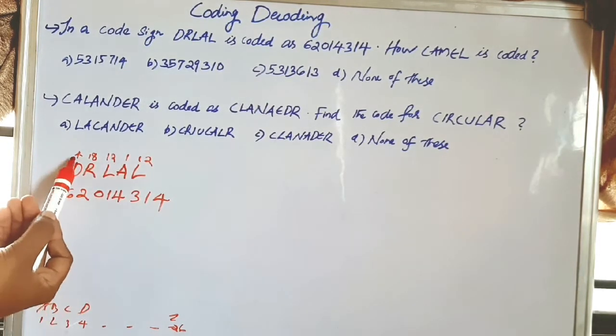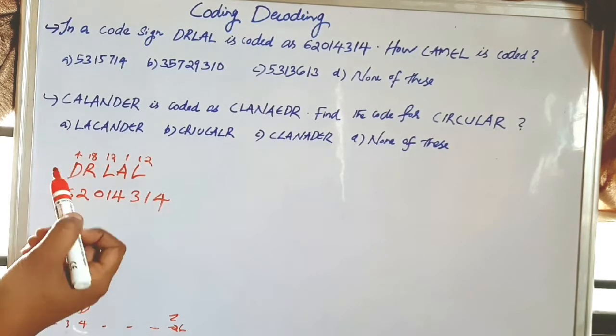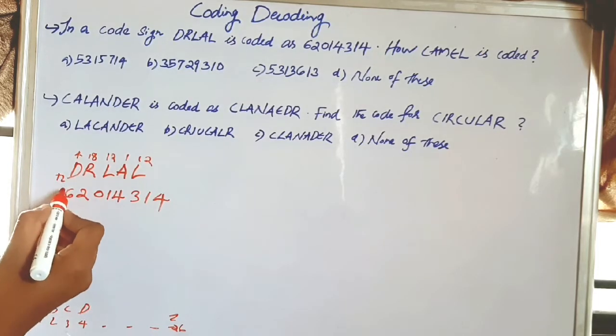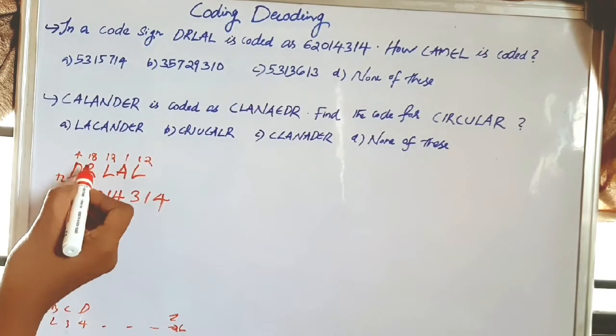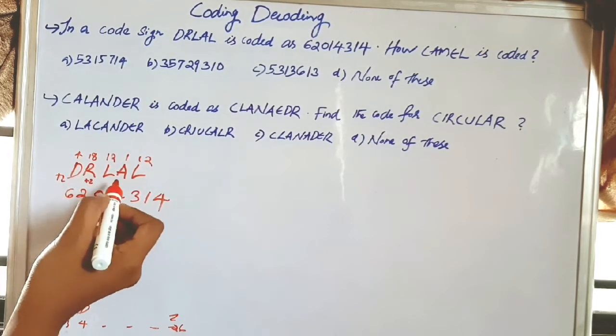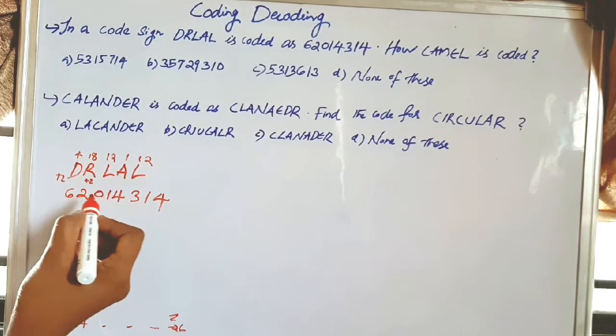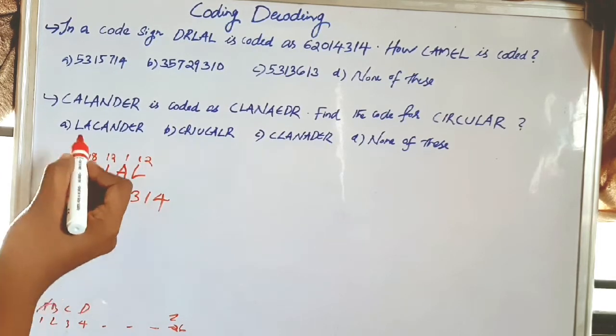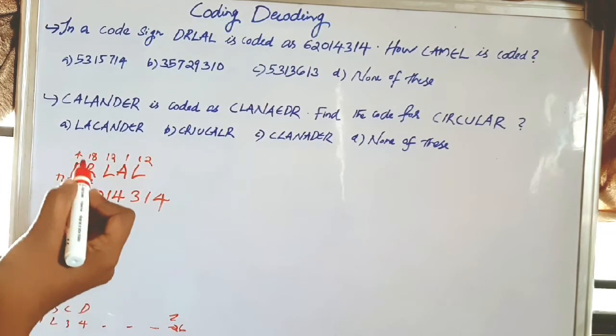4 plus 2 is 6, and 18 plus 2 is 20. So the positional value pattern is plus 2 — each letter's positional value is increased by 2.